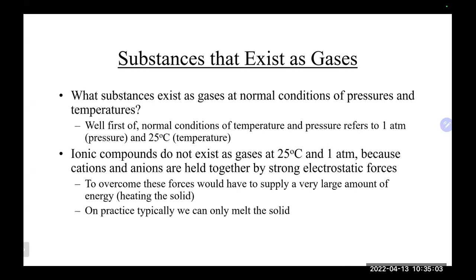Under those normal conditions of 25 degrees Celsius and one atmosphere, ionic compounds are typically not found as gases. That's really because ionic compounds are cations and anions, and those are held together by very strong electrostatic attraction — opposites attract — which is about the strongest attraction you can get.